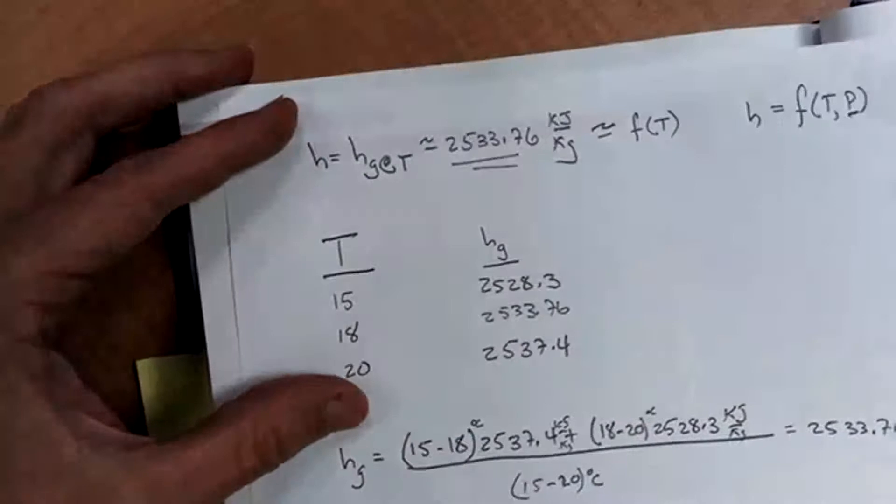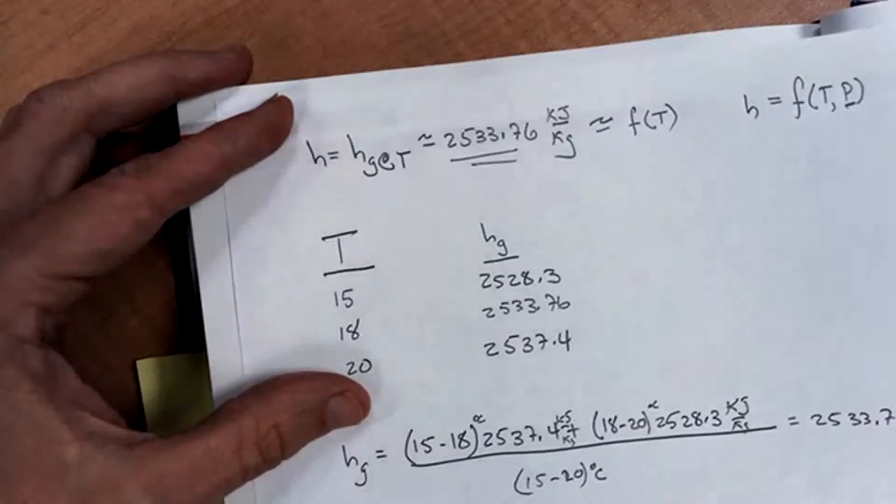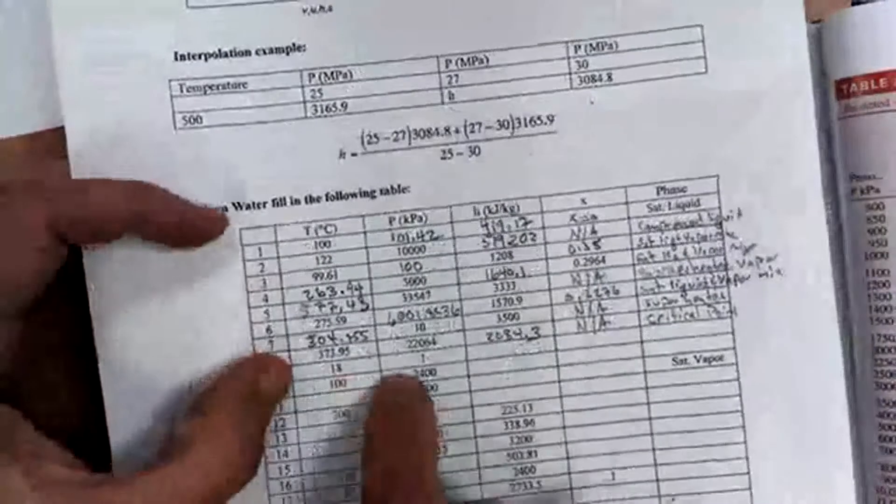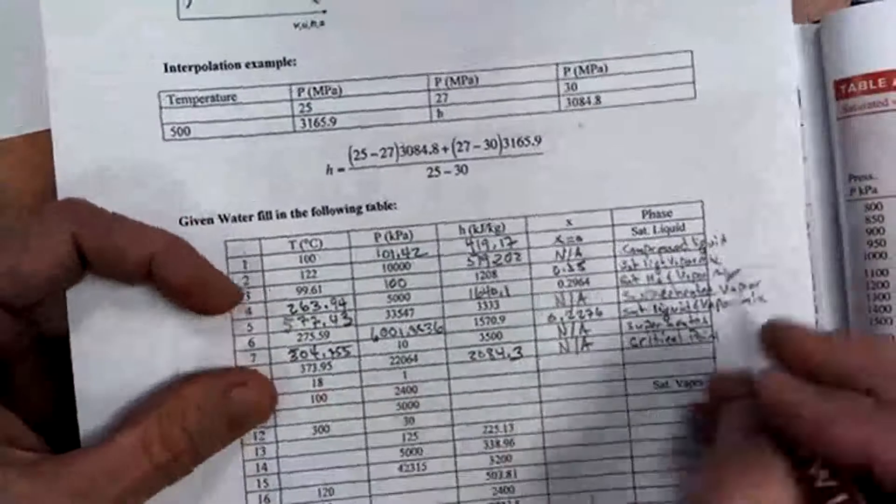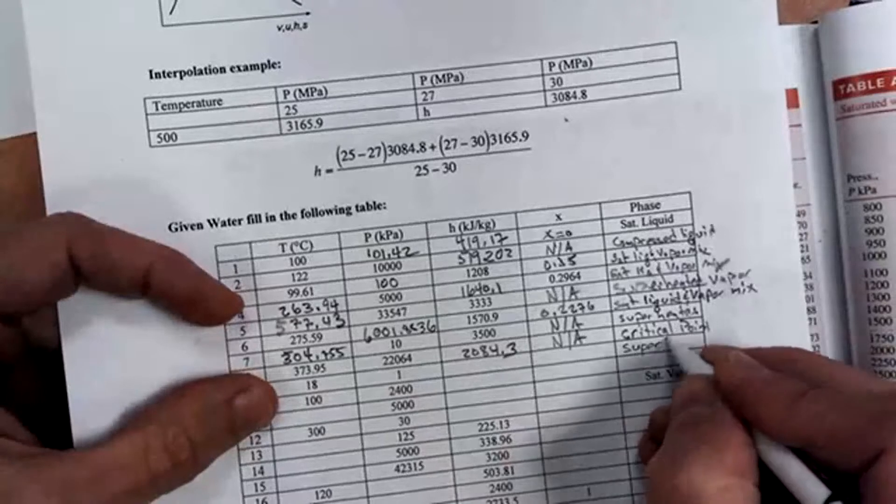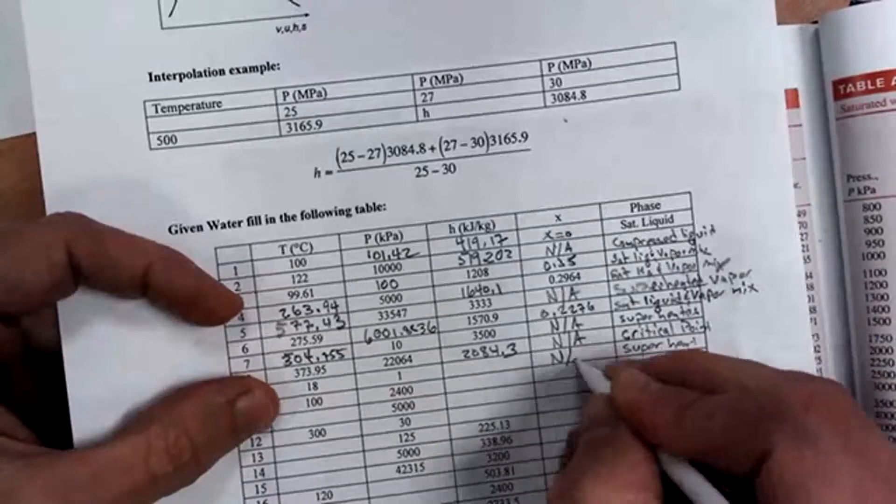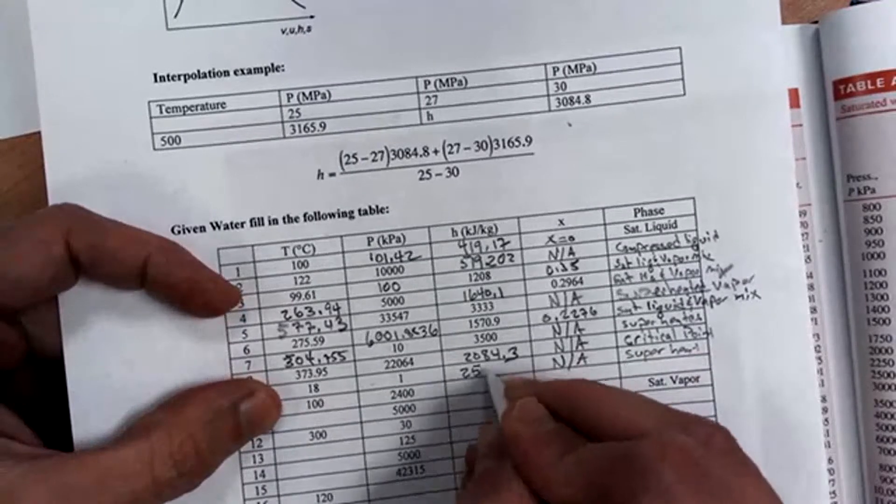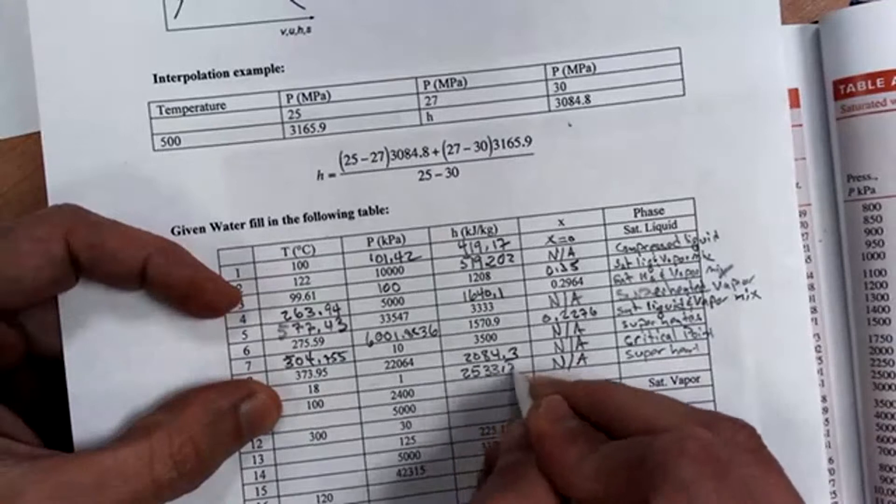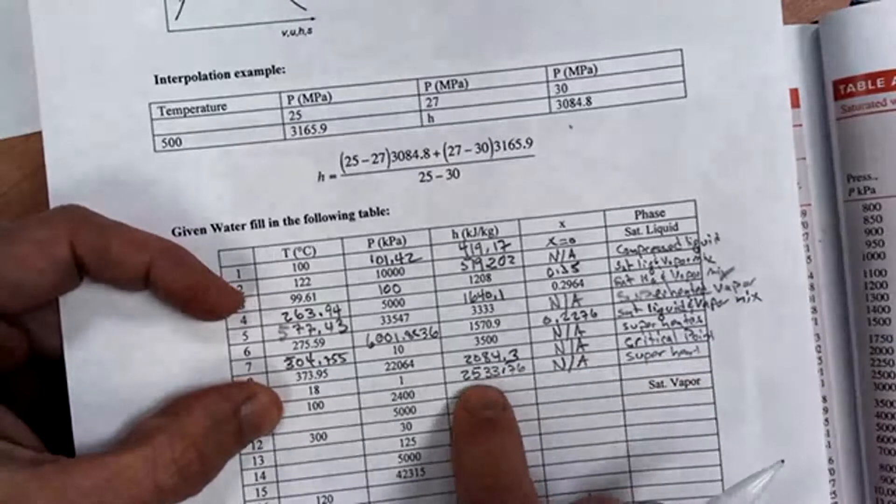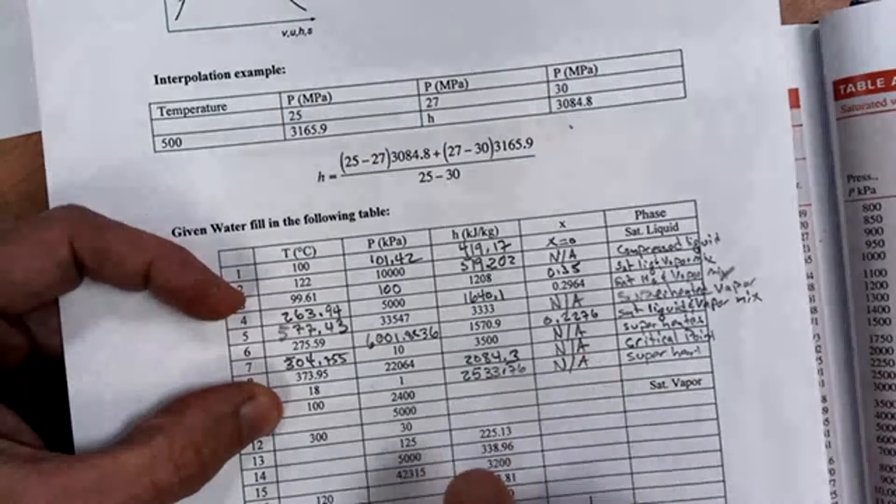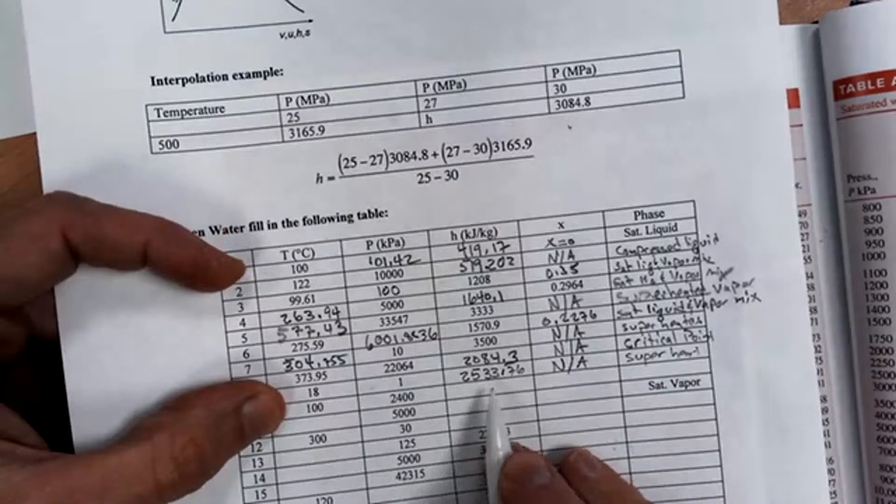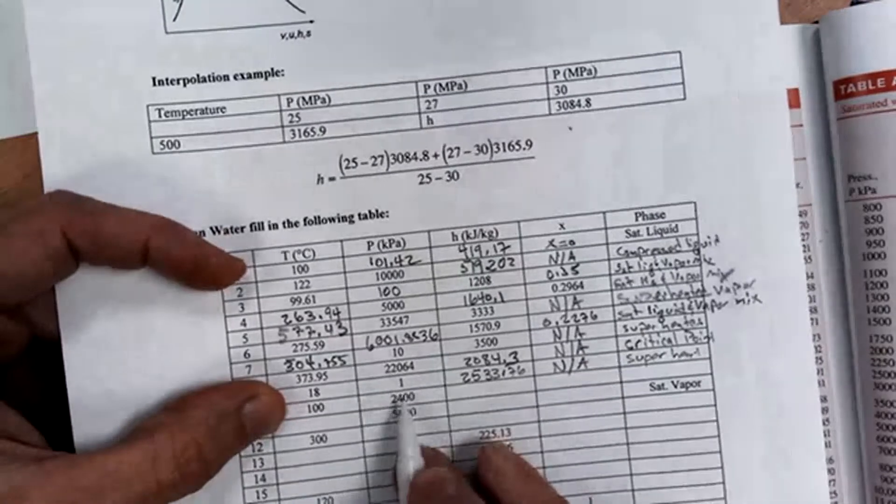We'll see that again in the very next problem also, something similar to this. So the bottom line is at 18 degrees and one kilopascal, I know that I'm superheated. I know that it has not applicable for the quality, and I'm going to estimate the enthalpy as 2533.76. And I got that from the steam tables, from the saturation tables, assuming that it's essentially the enthalpy of the saturated vapor at the given temperature, not the given pressure.